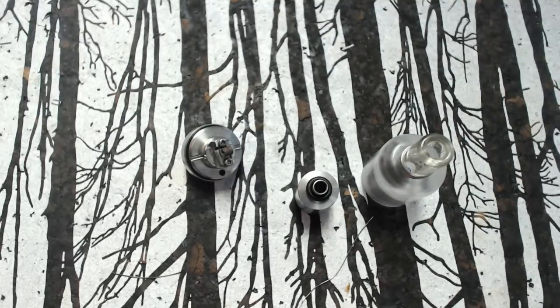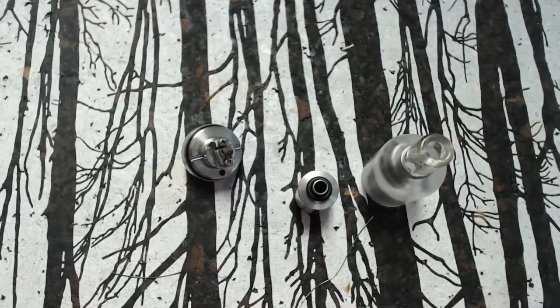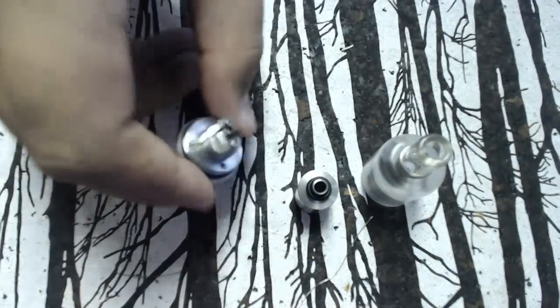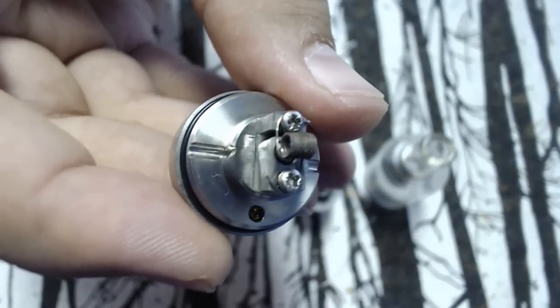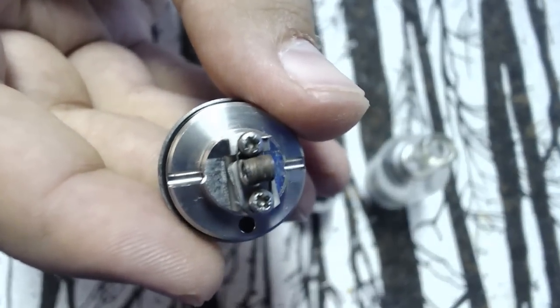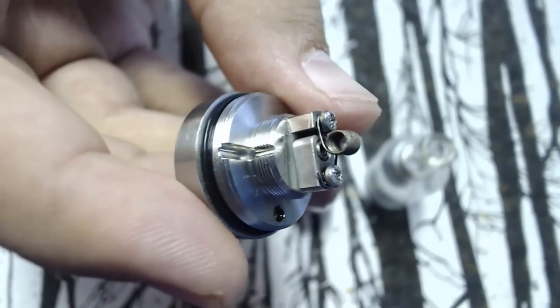Today, because I've promised you guys for a long time, we're going to be going over re-wicking of a Kayfun, not building a coil. The coil is pretty simple - it's a standard micro coil. I use a coil jig, it's about eight wraps, 28 gauge kanthal.